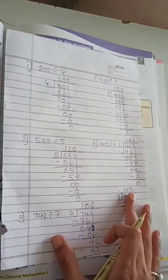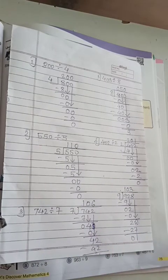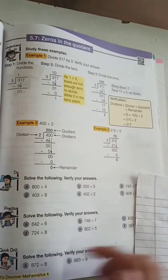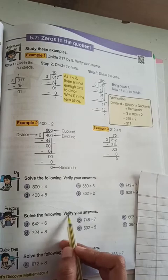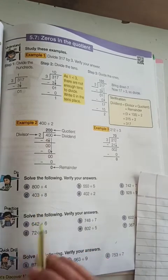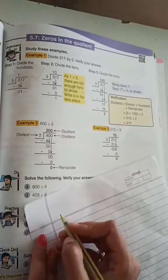So in this way you have to solve the first question. I will also send you the photo of it. Now see the next — solve the following and verify your answers. Again, same way you have to do. First one.